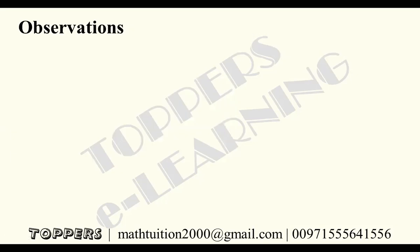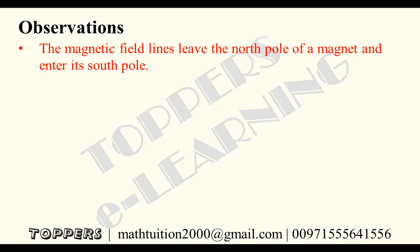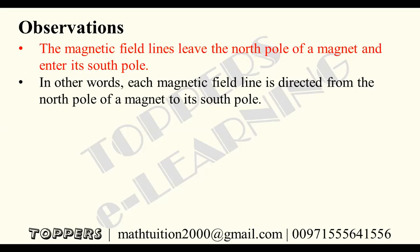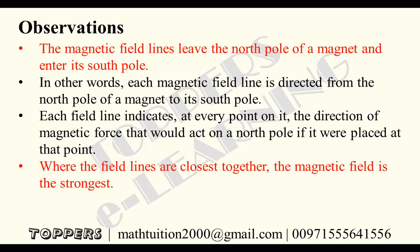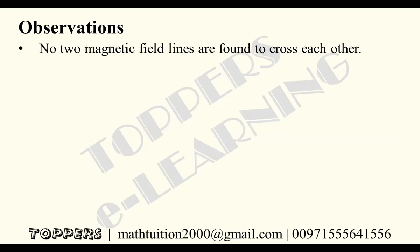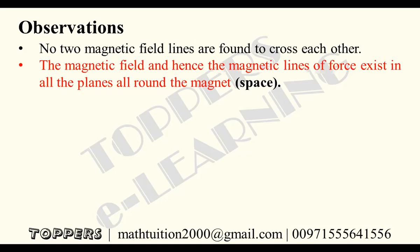What are the observations from this activity? The magnetic field lines leave the north pole of a magnet and enter its south pole; each magnetic field line is directed from the north pole to its south pole. Each field line indicates the direction of magnetic force that would act on a north pole placed at that point. Where the field lines are closest together, the magnetic field is the strongest — near the poles the lines are closer, so the strength is more. Also, no two magnetic field lines cross or intersect each other.